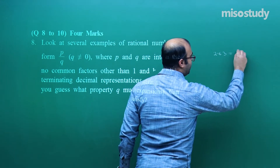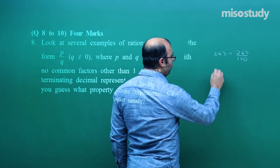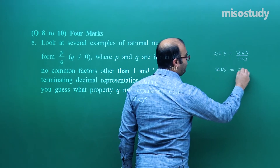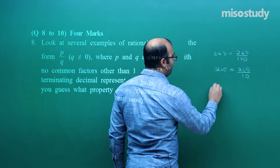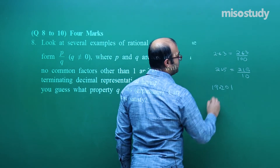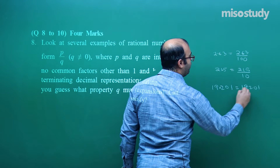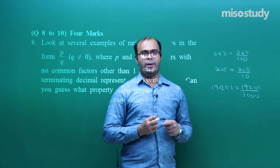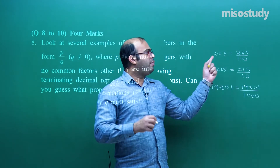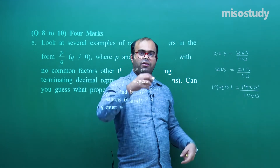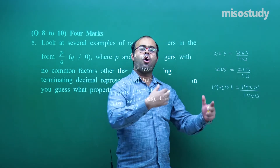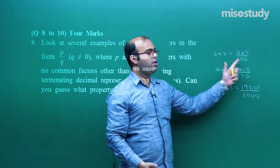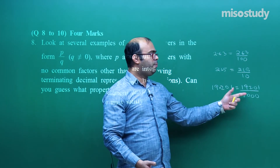2.63 written as a fraction becomes 263/100. The number 2.15 becomes 215/10. The number 1.921 becomes 1921/1000. Any terminating decimal can be written with 10, 100, or 1000 (and so on) in the denominator — depending on how many decimal places there are: 2 decimal places gives 100, 1 decimal place gives 10, 3 decimal places gives 1000.